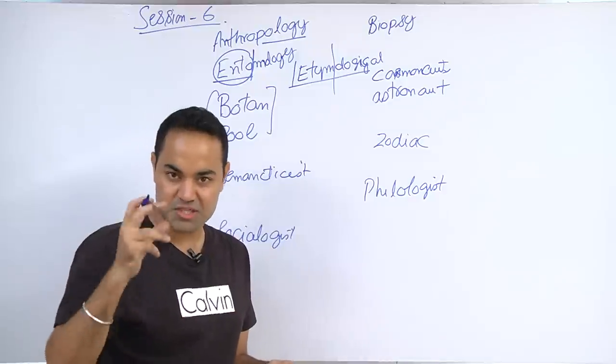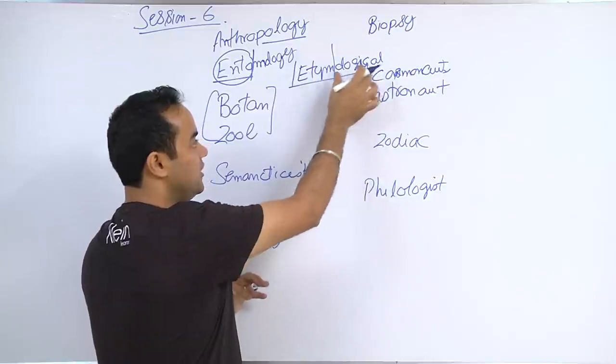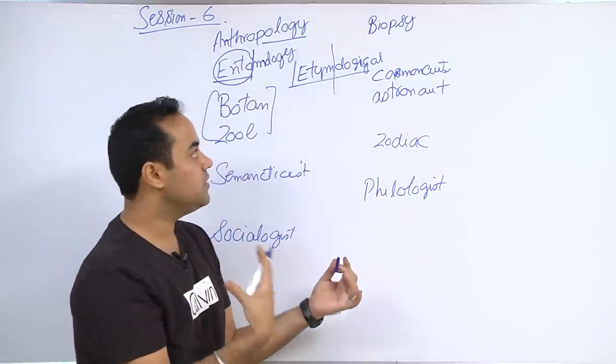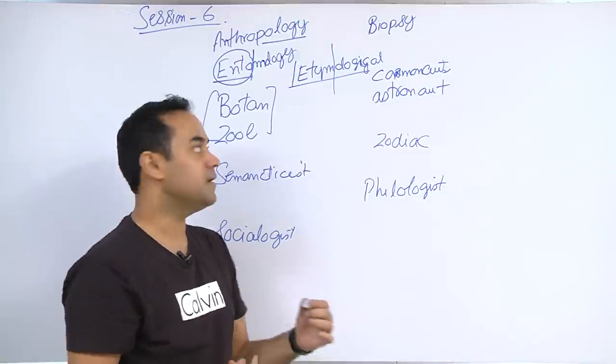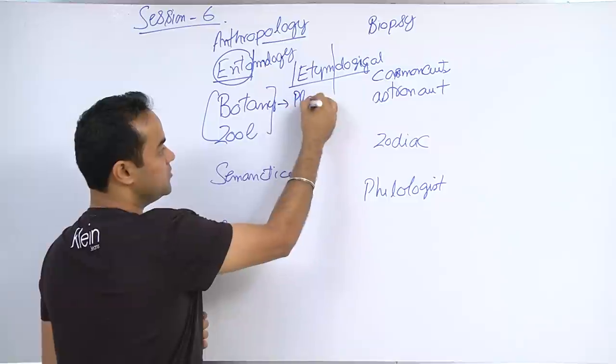Etymology means breaking up the big words into small sections or roots and understanding them - an etymological approach of learning words. As I said, we are learning the etymological way. Moving forward, botany - the study of plants.